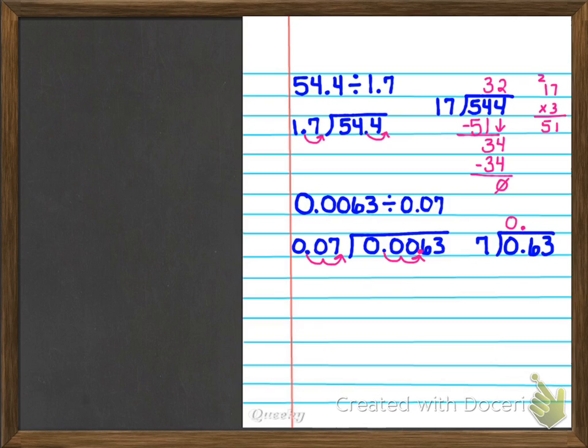I'm going to put my decimal there. And notice I said that seven goes into zero, zero times. Seven goes into six, zero times. But seven goes into 63 eight times. Eight times seven is 63. I get nothing left over. There's your answer, 0.08.